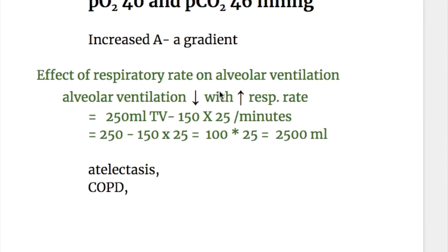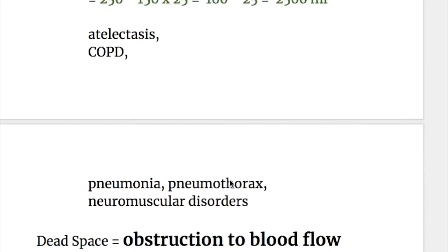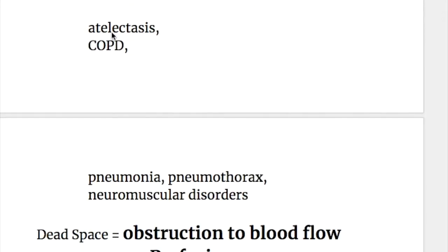Alveolar ventilation decreases with increase in respiratory rate, as tidal volume goes down. For example, if tidal volume is 250 minus dead space 150, multiplied by an increased rate of 25, then it's (250 - 150) × 25 = 2.5 liters. Conditions that cause shunts include atelectasis, COPD, pneumonia, pneumothorax, and neuromuscular disorders.